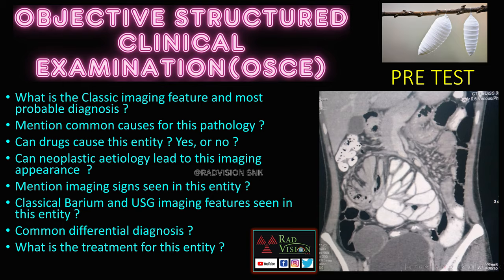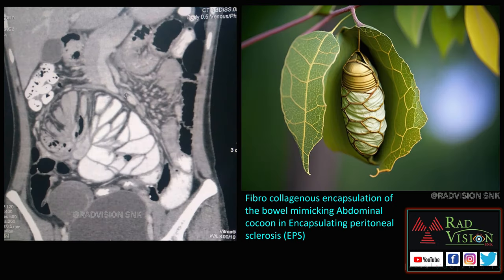This is the image you can see — you can pause the slide. This is the pre-test; you can answer all these questions after listening to this lecture in the post-test. You can see there are multiple small bowel loops, typically clumped or clustered in the central abdomen, surrounded by a hypodense membrane, giving a cocoon appearance. This is nothing but fibrocollagenous encapsulation of the bowel, mimicking the abdominal cocoon in encapsulating peritoneal sclerosis (EPS).